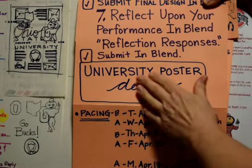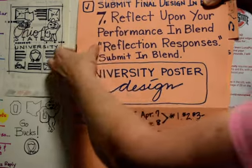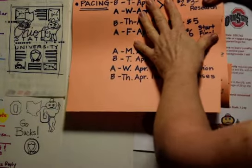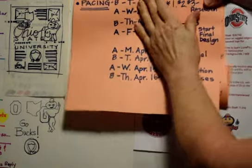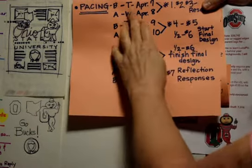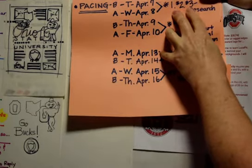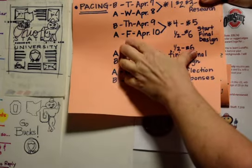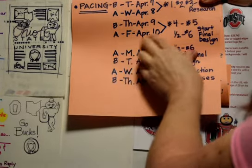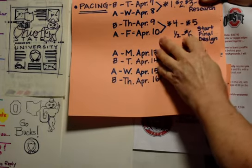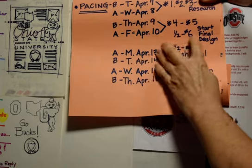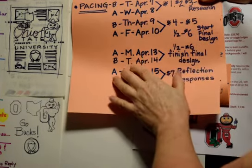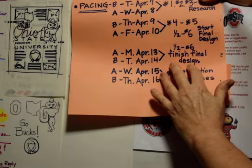The pacing of this university poster design will be something that you do a little bit every day. On Tuesday and Wednesday, you're going to do parts one, two, and three — three being the research. Thursday and Friday, you are going to focus on numbers four and five, and then you're going to start to do half of your final design. Next week, on Monday or Tuesday, you're going to finish the final half of this design.